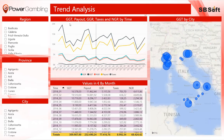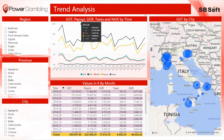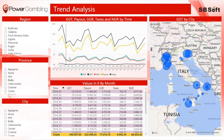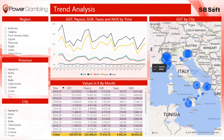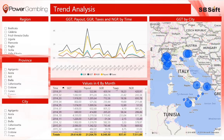In the Trend Analysis Report, we have some very intuitive parts that let you monitor gross gaming total, payout, gross gaming revenue, taxes, and net gaming revenue by time. A visual map shows the gross gaming total by city, and the table below contains the values in euros by month.